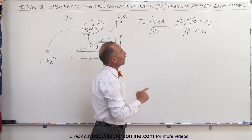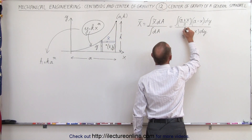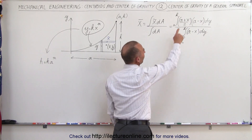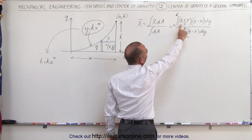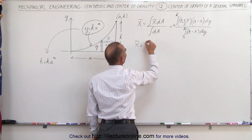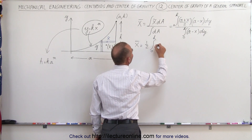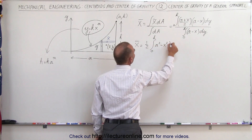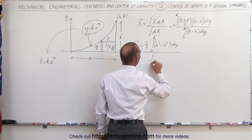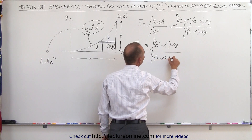We're going to integrate in the y-direction from 0 to h, so the limits would be from 0 to h. We can factor 1/2 out of the numerator and multiply these terms. That gives us the x-coordinate of the center of mass equal to 1/2 times the integral from 0 to h of a² minus x² times dY, divided by the integral from 0 to h of a minus x times dY.